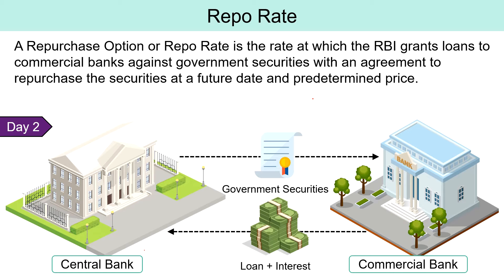When the repo rate falls, it facilitates commercial banks to avail funds at a cheaper rate. Whereas, if there is a hike in repo rate, it discourages commercial banks from raising funds from RBI, as with the increase in rate, loans get expensive.